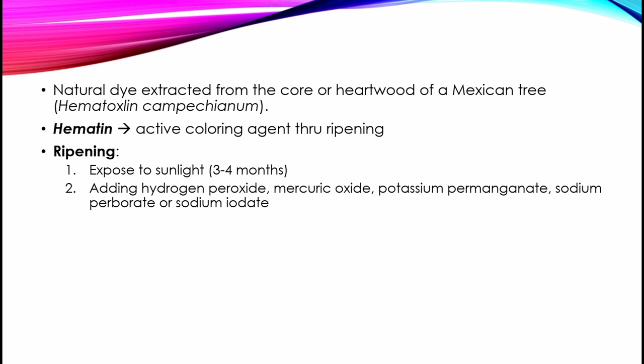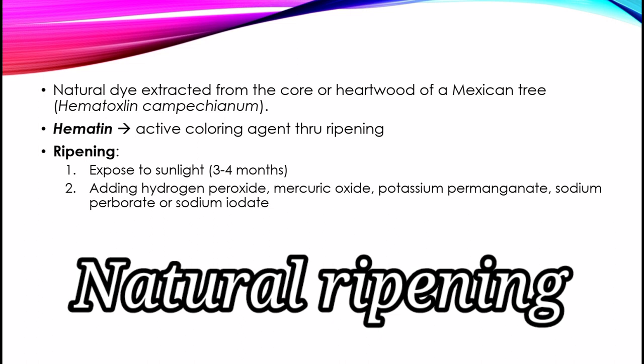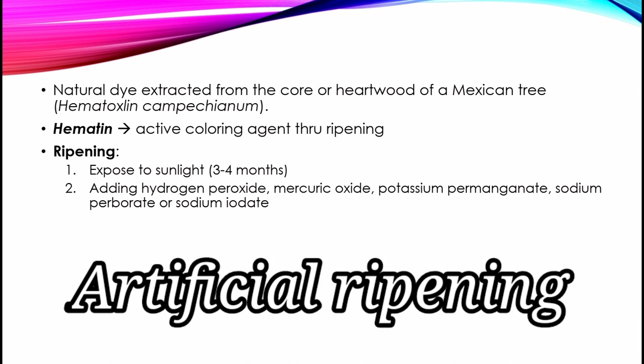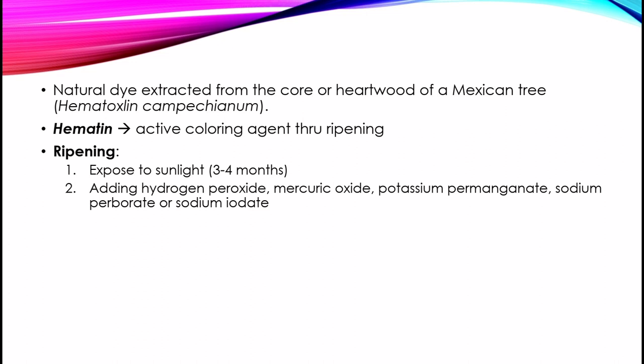Ripening is usually accomplished by exposing the substance to air in sunlight, thereby oxidizing hematoxylene through natural ripening. Such a process is slow and it takes as long as 3 to 4 months, sometimes up to 6 months, but it can be accelerated by adding strong oxidizing agents such as hydrogen peroxide, mercury oxide, potassium permanganate, sodium perborate, or sodium iodate, which converts hematoxylene to hematin almost instantaneously by chemical oxidation — a process known as artificial ripening — so that the staining solution is ready for use immediately after preparation. It is essential that the oxidant be used in the correct amount since excessive oxidation or over-ripening leads to the production of other useless compounds.